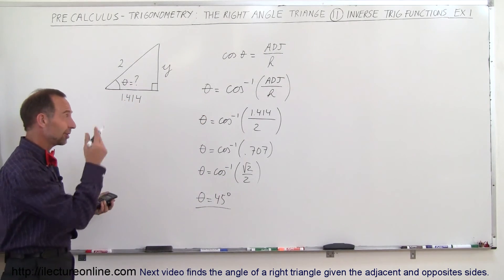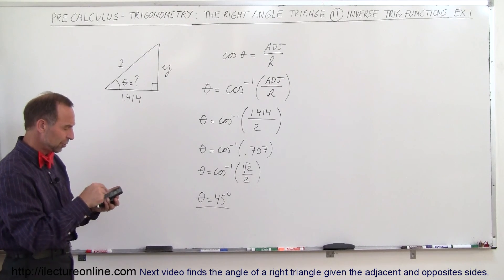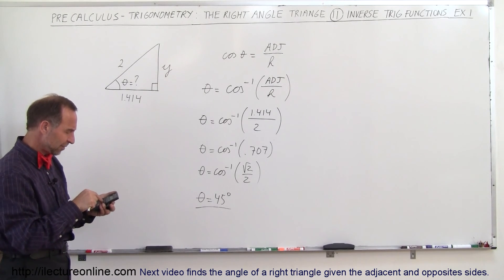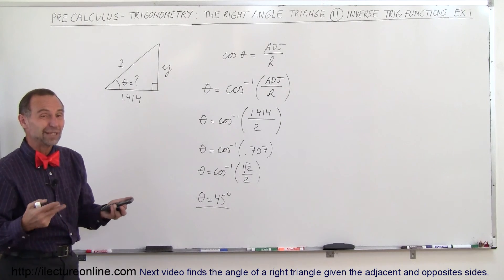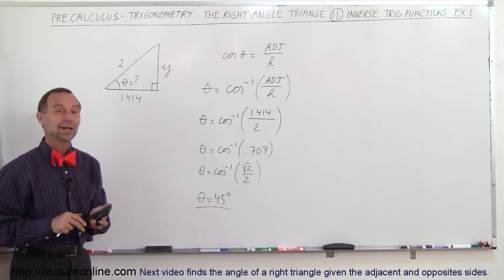Or you could have simply said, okay, let me punch in 1.414 divided by 2, take the inverse cosine of that, and you get 45 degrees, so either way you could solve the problem, and that's how we do that.